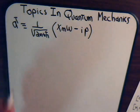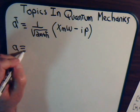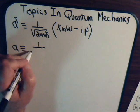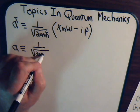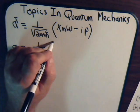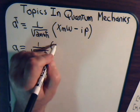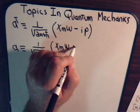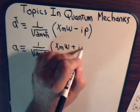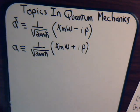And for a, there's the complex conjugate. So, we have xm omega plus i times p.